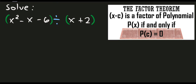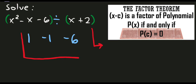If we have x squared, we have 1 as its numerical coefficient. We have negative 1 for negative x, and we have negative 6 as our constant. So let's use this bar and solve its quotient. If we have x plus 2 as our divisor, let's determine the value of c. Since x plus 2 stands for x minus c, the value of c is equal to negative 2.